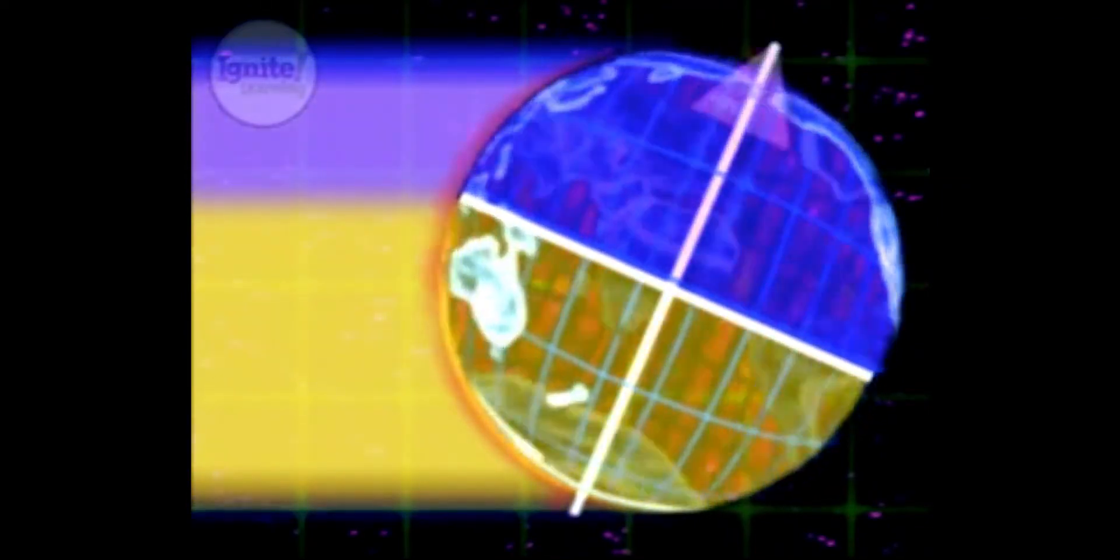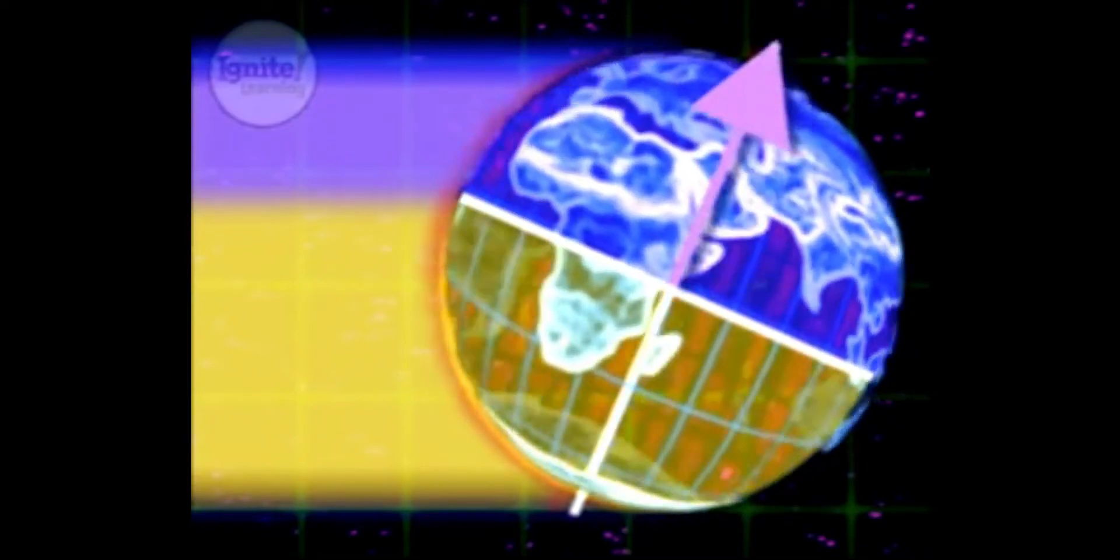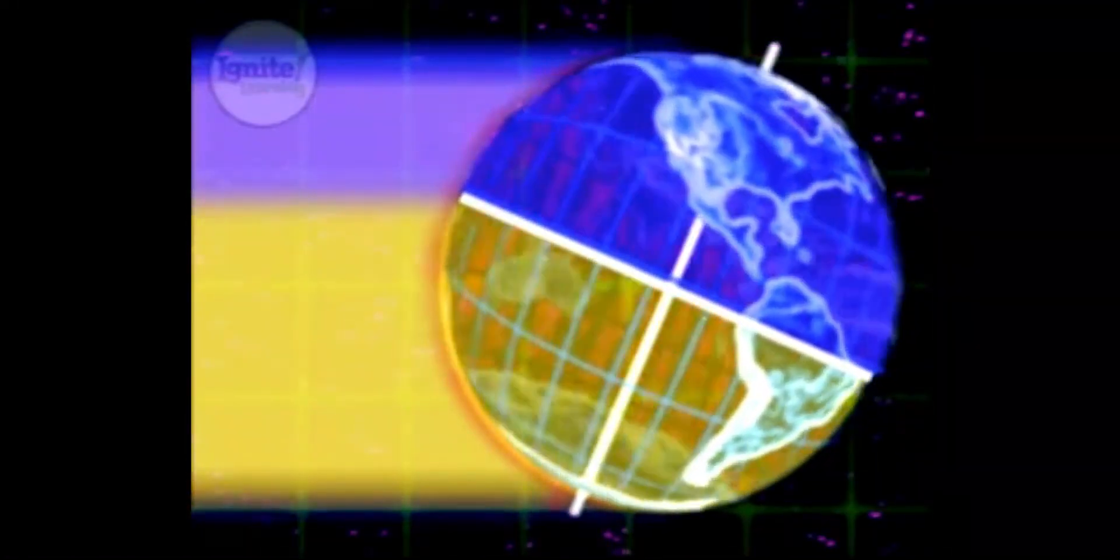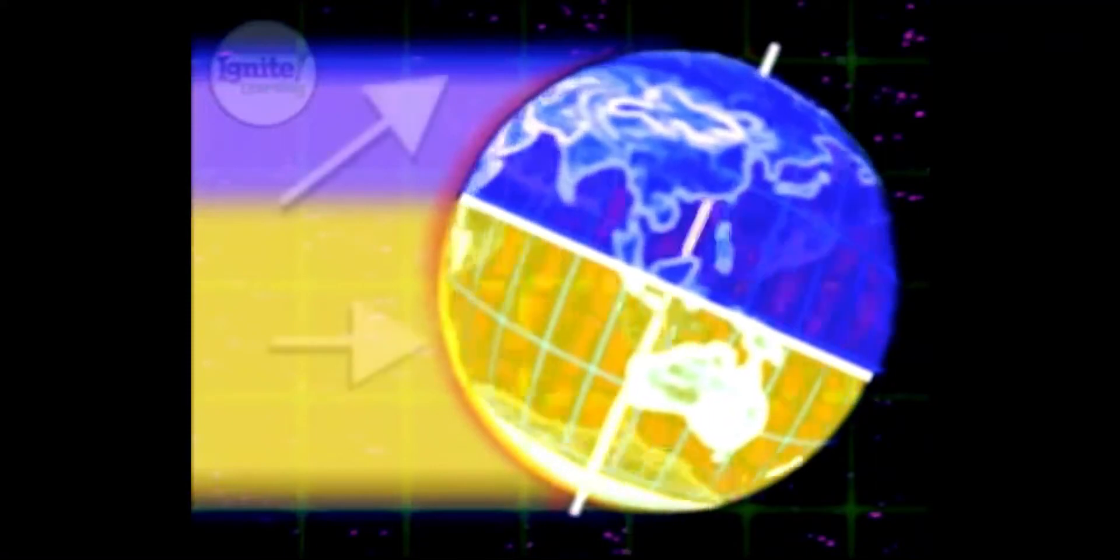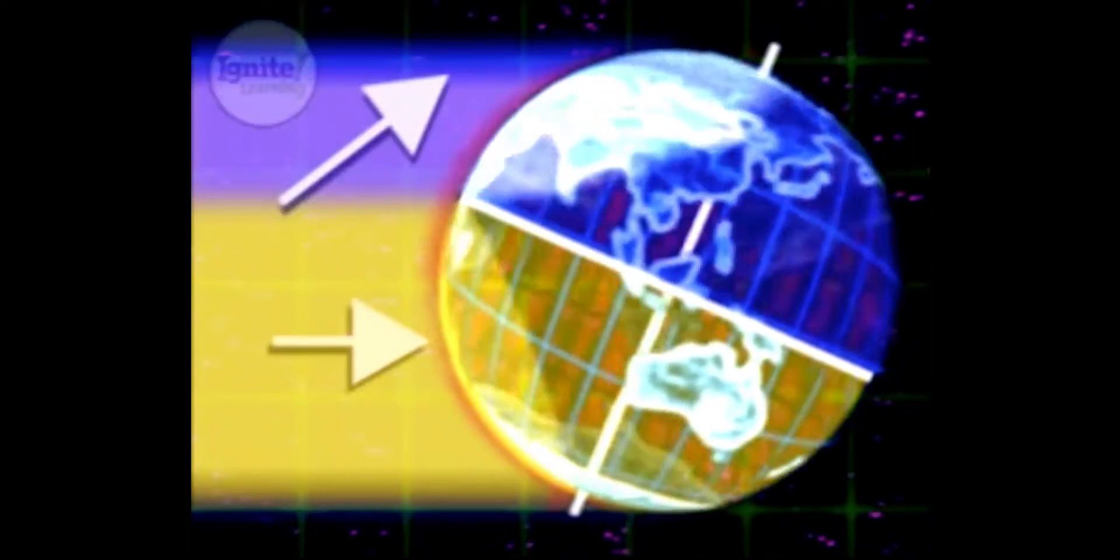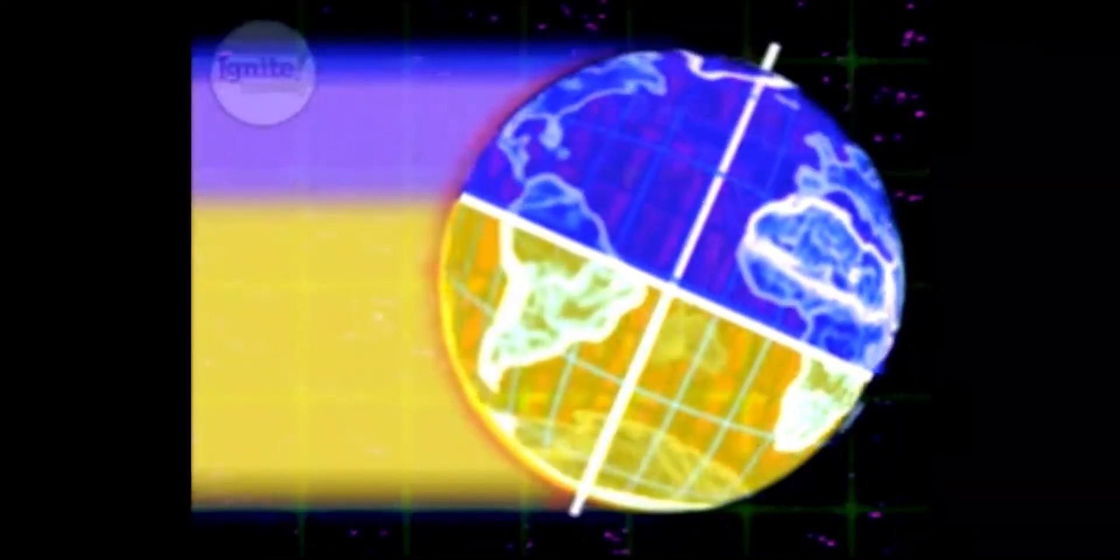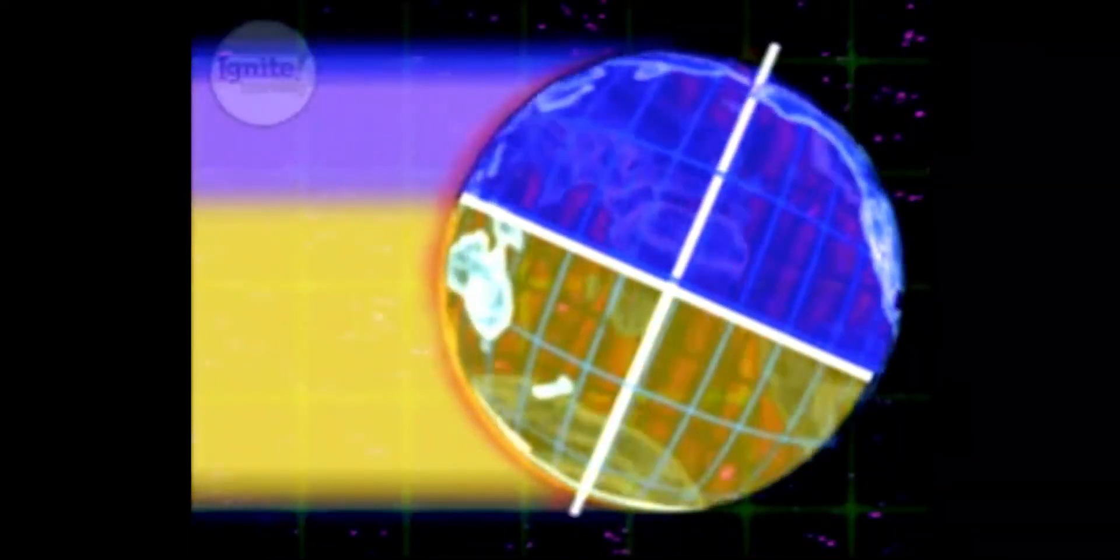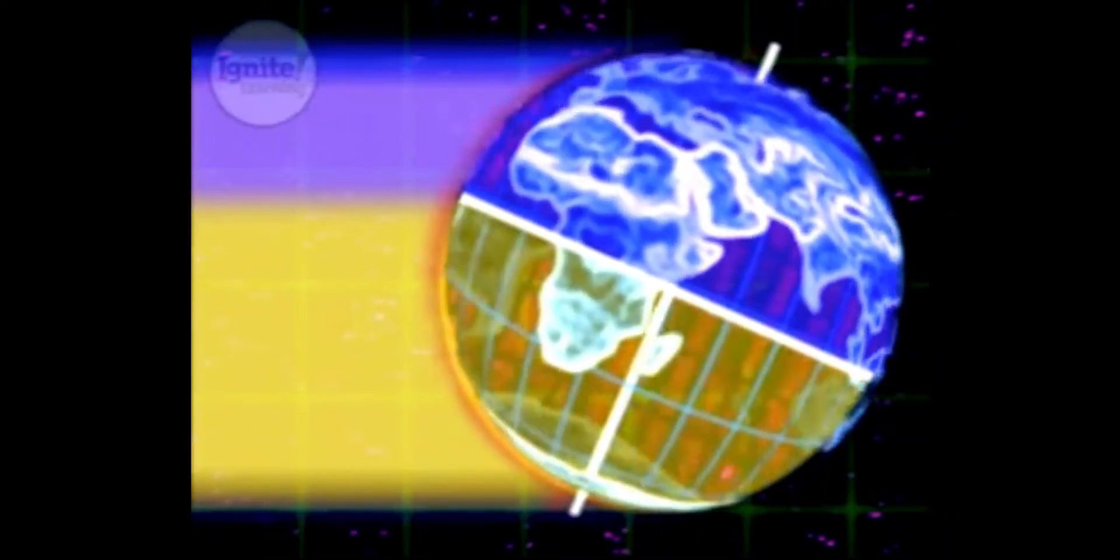But look at how the northern hemisphere is pointed away from the Sun. Also, the light hits at an angle that causes the energy to be spread out over a greater area. So at this spot in Earth's revolution, it receives less of the Sun's energy.